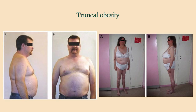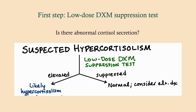This is truncal obesity — not super specific on its own. The first step in workup is the low-dose dexamethasone suppression test, which just answers: is there abnormal cortisol secretion? If cortisol remains elevated, you're dealing with hypercortisolism. If it suppresses back to normal, you need to consider alternative diagnoses.